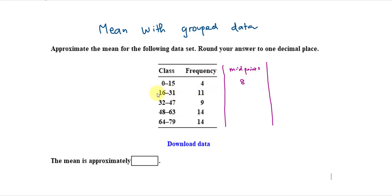To find the next class midpoint, I simply take the lower class of that current row, 16, add it to 32, and then divide by 2. So, 16 added to 32, divide by 2, that will give me 24.